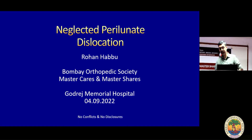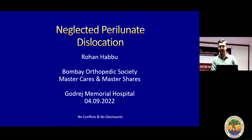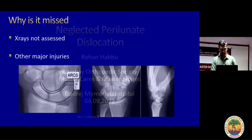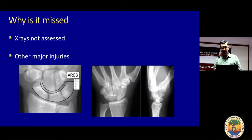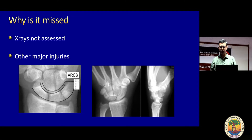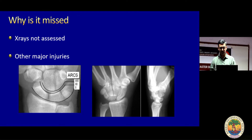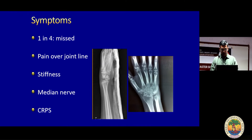We are focusing now primarily on neglected perilunate dislocation. It's kind of like you have missed the bus — now what to do? Commonly it's missed because X-rays are not assessed well and there are other major injuries, and the wrist is given secondary treatment. Once the patient gets out of all medical and surgical issues at three or four weeks, the wrist is assessed and you find something like this.